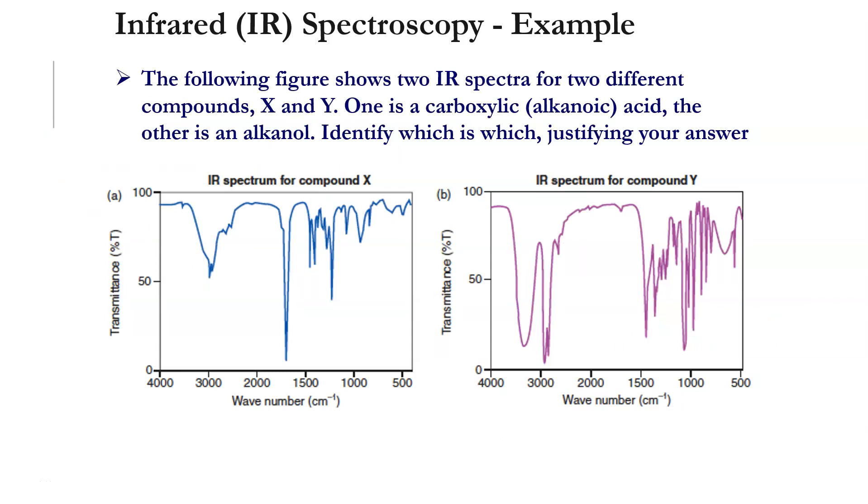If we look at these two compounds X and Y, one of them is a carboxylic acid and the other is an alcohol. Pause the video and see if you can tell which would be which and have a go at justifying your answer. Then come back and see what I have to say.